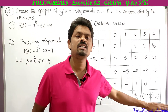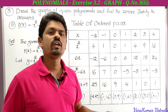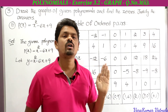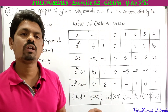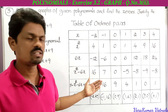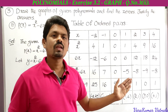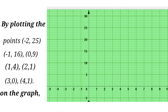Now we plot these ordered pairs on the graph sheet to get a curve. From the curve, we observe where it intersects the x-axis — that gives the zeros. Before plotting, we select the scale: on the x-axis, 1 centimeter equals 1 unit; on the y-axis, 1 centimeter equals 5 units.